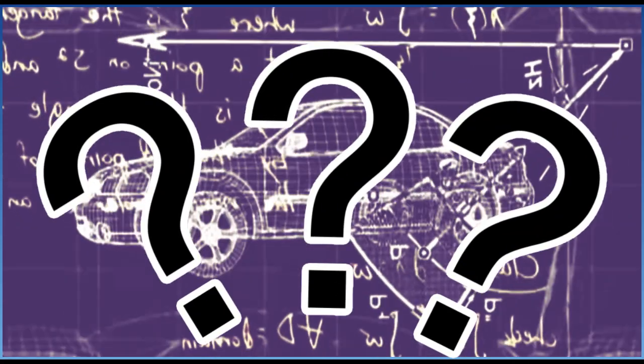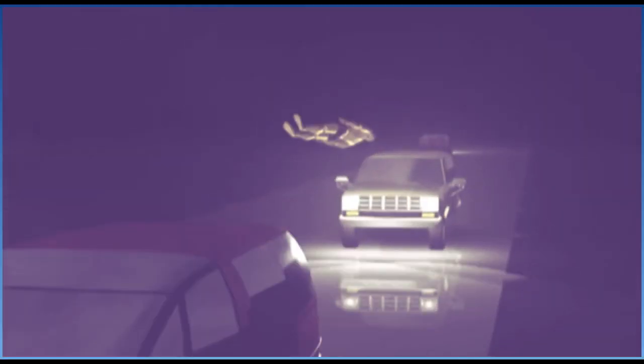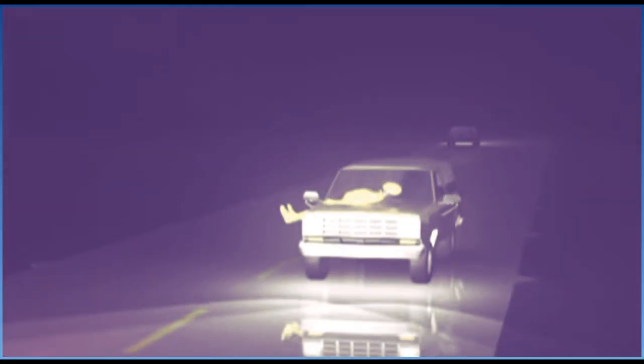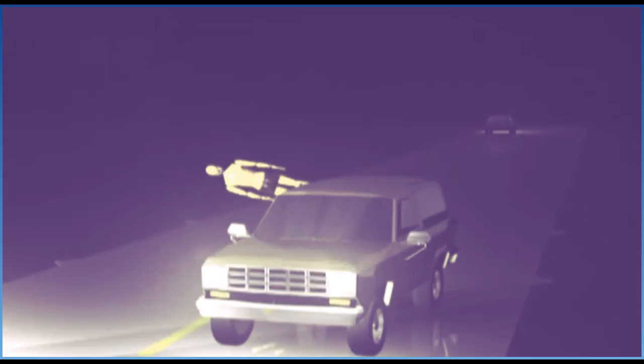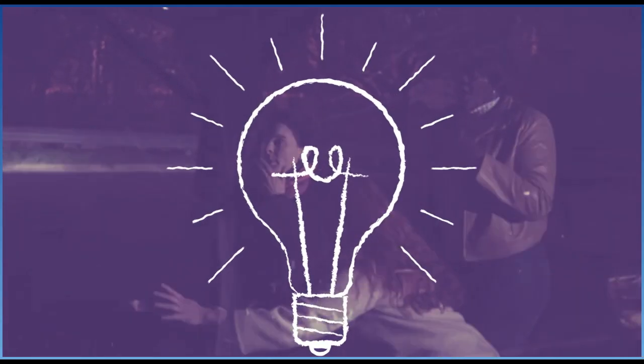Crash investigators see a car crash as a puzzle. To solve the puzzle, they use scientific laws of motion. Scientists use evidence to explain that an object in motion continues in motion until something stops it. Although the investigator may ask the drivers of the two cars who caused the accident, he gets a lot of information by examining the two cars. He also finds out more using what he knows about force, energy, and motion.